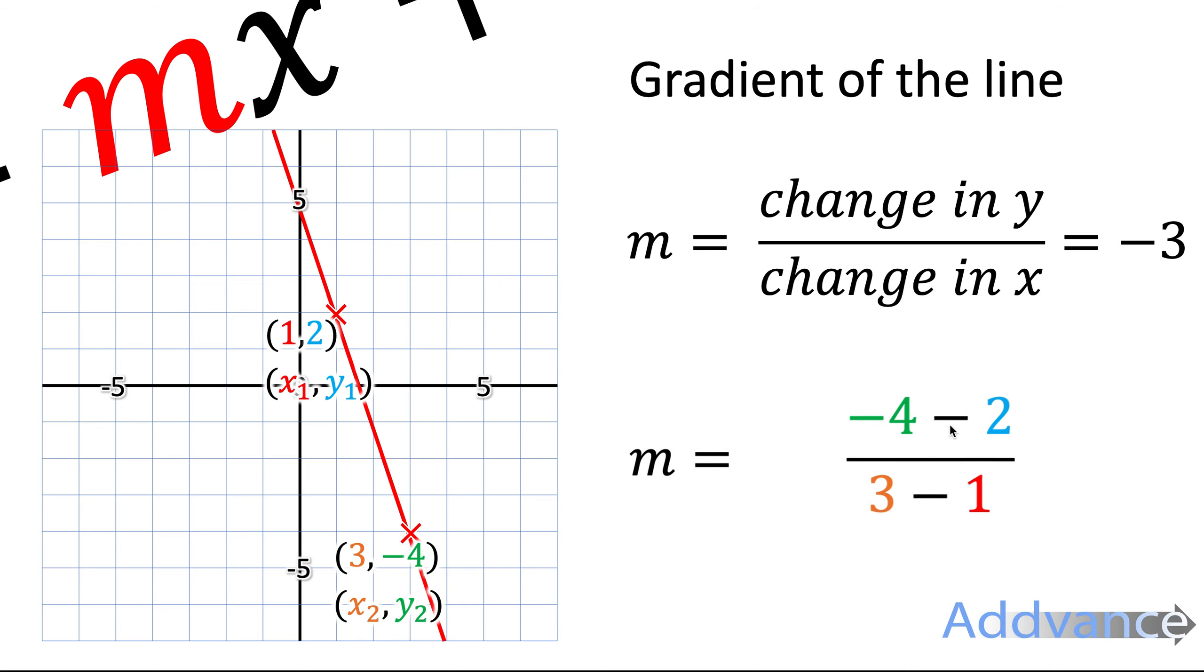Minus 4 minus 2 is minus 6. And 3 minus 1 is 2. So again, we have minus 6 divided by 2 will give us minus 3 again. So both methods work.